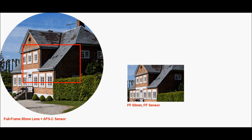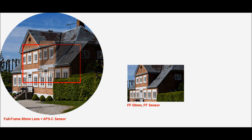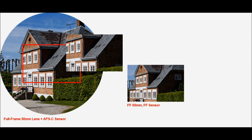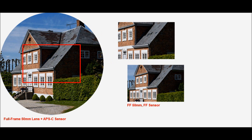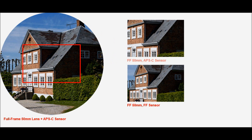Let's capture another photo and save it on the right side of the screen. Do you notice anything? Because the sensor size has been reduced, the camera can only see a smaller portion of what the lens covers. Thus, the effective field of view is now narrower.